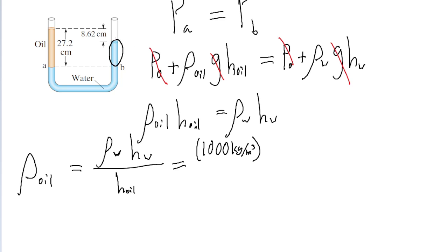because we're looking for the height of this little column of water just above point B, which we can see is going to be 27.2 centimeters minus 8.62 centimeters, based on the geometry of this little situation here. So that is 0.272 meters minus 0.0862 meters.